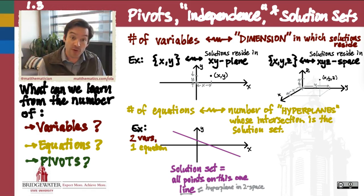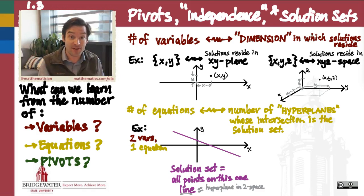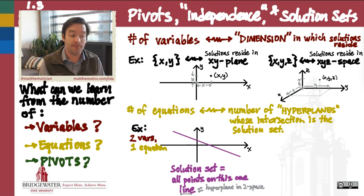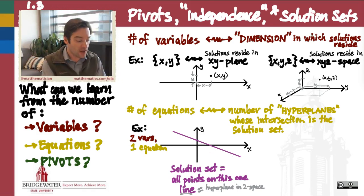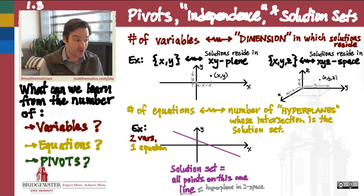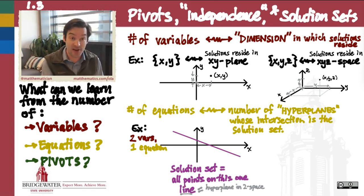And remember, we're using the word hyperplane to describe this, because hyperplane means one dimension less than the space that surrounds it. So in two dimensions, a hyperplane is a one-dimensional object — i.e., a line. Two variables, one equation: that determines only a single hyperplane, a single line, and that line is therefore the solution set. We don't have anything else to intersect it with, so that whole line is going to be the solution set of that system.